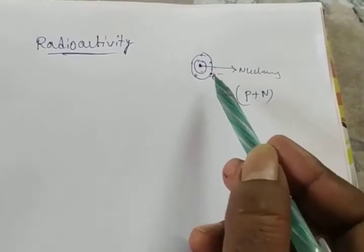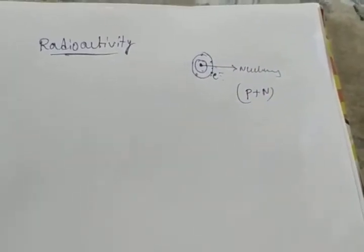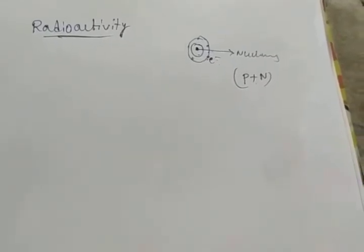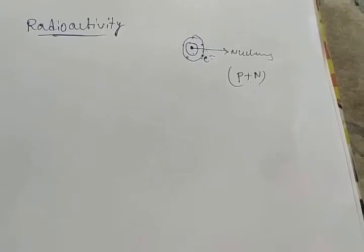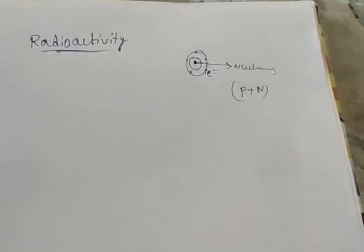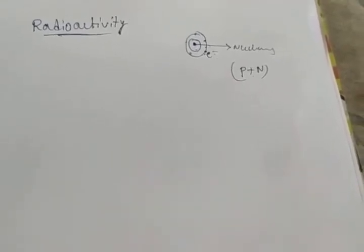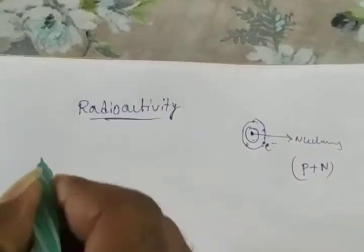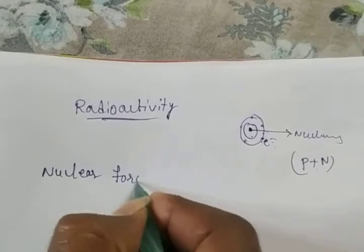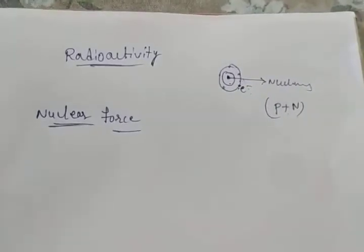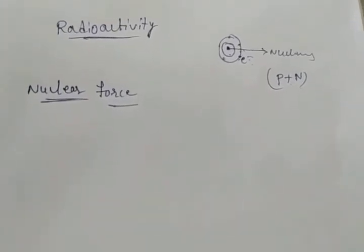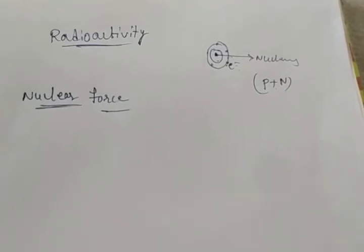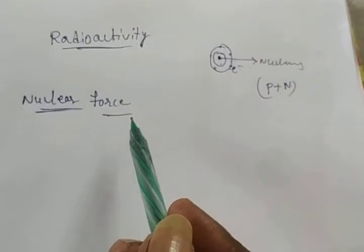But more than one proton inside the nucleus means there is repulsion between the protons inside the nucleus. If repulsion is there, atoms are not stable. How then do atoms remain stable? The answer is nuclear force. Other than electrostatic force of repulsion, there exists nuclear forces inside the nucleus. Nuclear force is much more stronger than the electrostatic force, but it can show its effect only on very small distances.